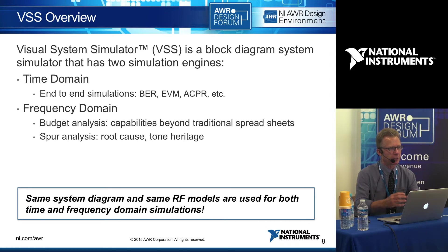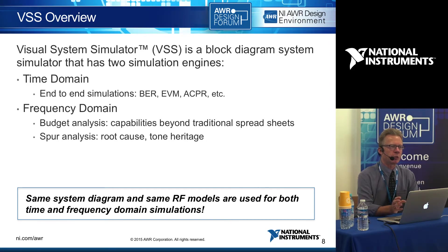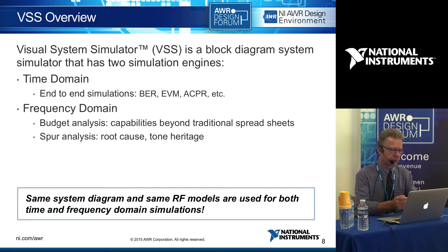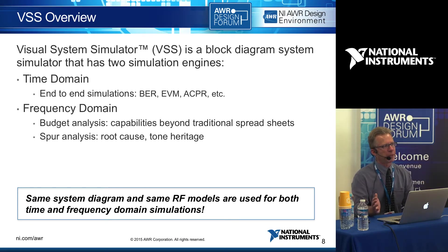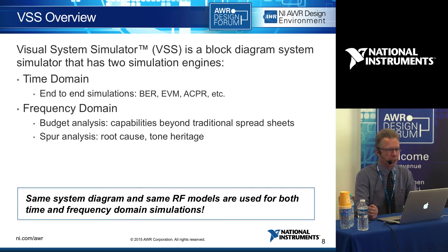Budget analysis is one side where you can look at the contribution of each block to the overall cascaded noise figure. You can do swept analysis, yield analysis, and sensitivity analysis. The other capability is spur analysis — looking at an architecture to predict and tell you where all the spurs are coming from, which elements are creating them and at what levels, so you have some chance to mitigate that. Time domain simulation is really for end-to-end and looking at modulation quality and throughput; frequency domain gives a broadband approach to look at all the spurs of an architecture.